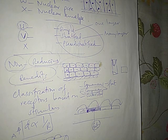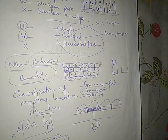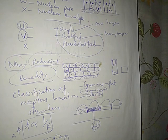These cells being columnar and being one layer is also an adaptation, because it makes easier the transportation or absorption of materials from the stomach or from the GI tract into the bloodstream.